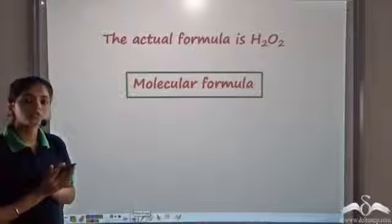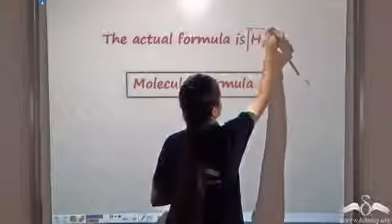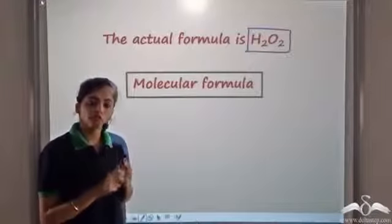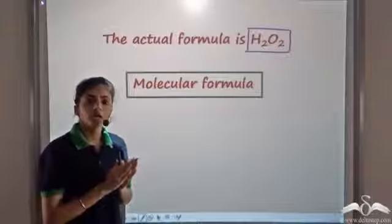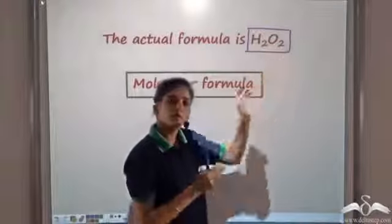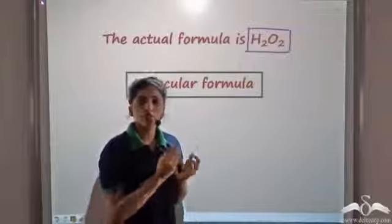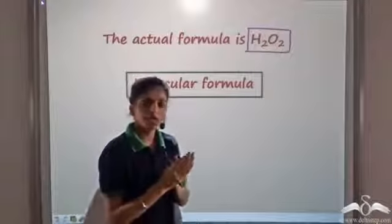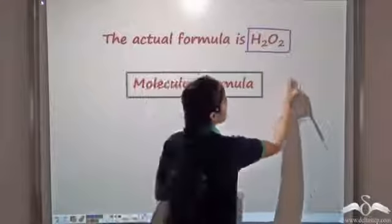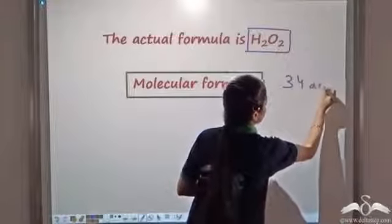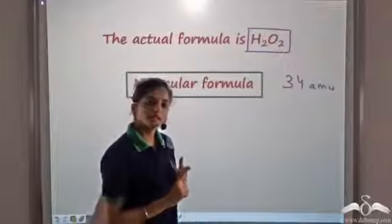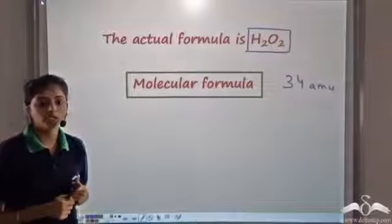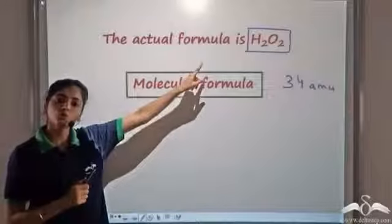The molecular formula shows the exact number of atoms present in a compound. From the empirical formula, we know the ratio of hydrogen atoms and oxygen atoms in hydrogen peroxide is 1 is to 1, but we do not know the exact number of each. When we know the molecular weight — in this case 34 atomic mass units — we can conclude that the molecular formula of hydrogen peroxide is H2O2.